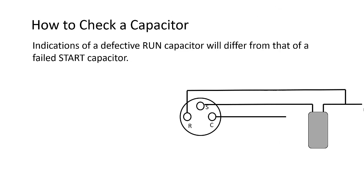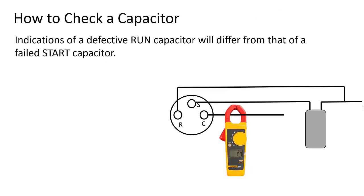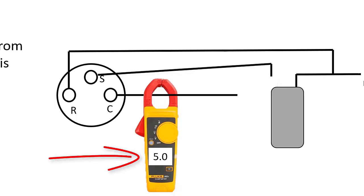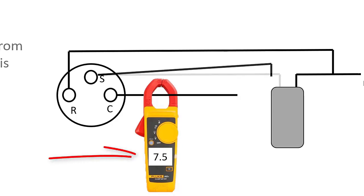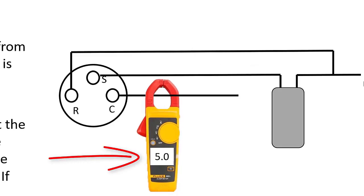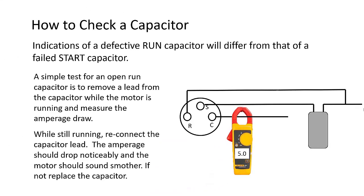Checking a run capacitor is different than checking a start capacitor. Using your multimeter, loop the common wire and check your amp draw. Then carefully disconnect a wire from the run capacitor. If the run capacitor is good, the amp draw should go up by about 50%. If the amp draw does not change or only changes by a small amount, you have a bad run capacitor. Reconnect your wire and the amp draw should go back down and the motor will run smoothly.